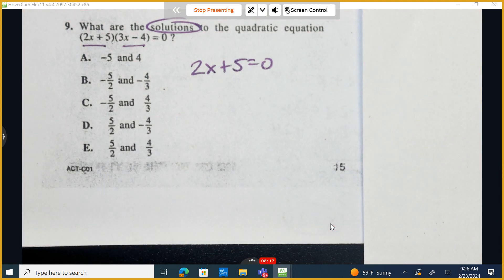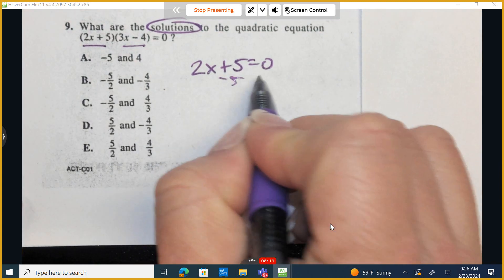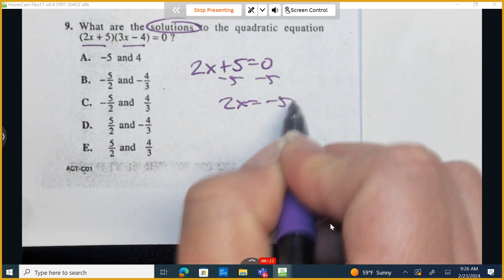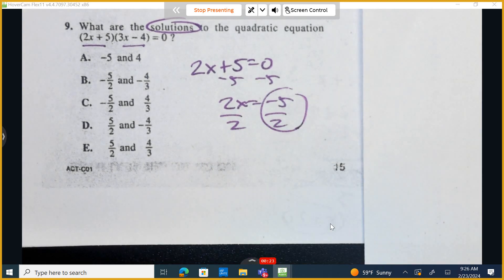But I'm only going to do one at a time. So I'm going to subtract 5 to the opposite side, and I'm going to divide by 2. And now I'm going to go through and cancel out any multiple choice option that does not include negative 5 halves.